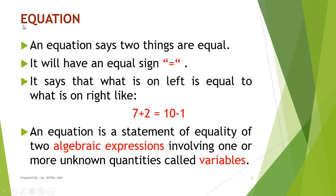First of all, we will start with the term 'equation'. As the name suggests, equation is a name derived from 'to equate', or the equal to sign. An equation says two things are equal — it will have an equal sign, meaning what is on the left is equal to what is on the right: LHS is equal to RHS.